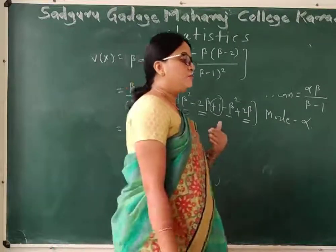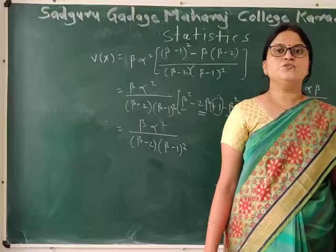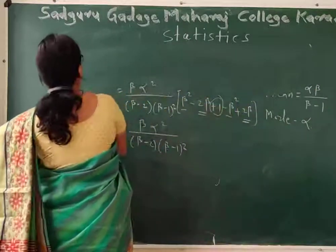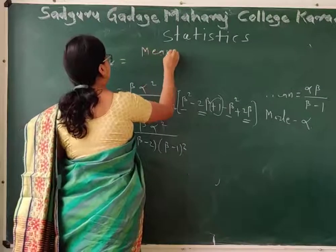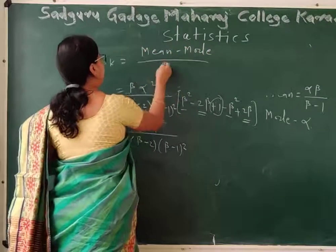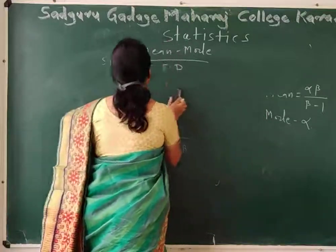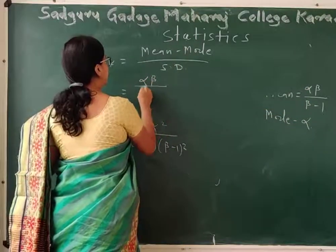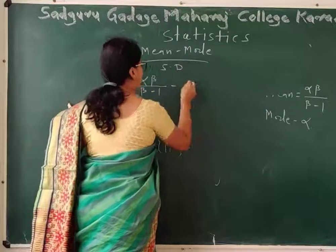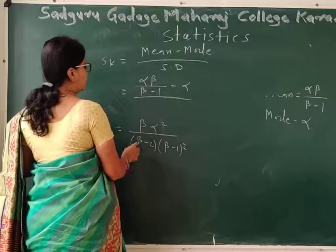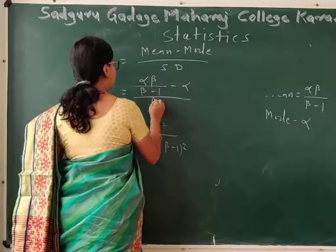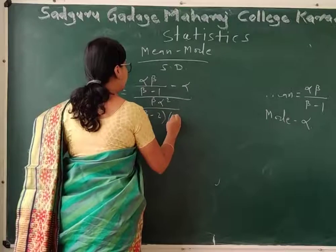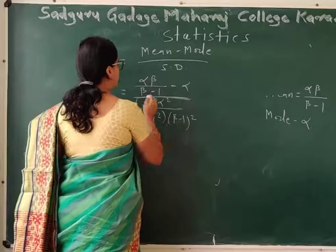Now the next point is to find the skewness by using mode. The formula for skewness by mode is: mean minus mode, divided by S, where S is the standard deviation. The mean is alpha beta divided by beta minus 1, mode is alpha, and S is the square root of beta alpha squared divided by beta minus 2 times beta minus 1 squared.